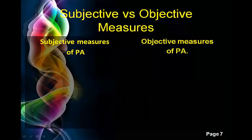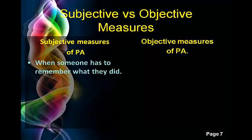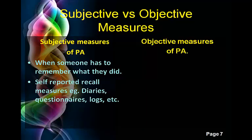Now we'll look at how we actually measure activity — subjective and objective methods. Subjective measures are when someone has to actually remember what they did; they have to self-report or recall their activities. This includes things like diaries, where they write down what they've done; questionnaires, where they answer questions given by a researcher; and logs, which are a daily rundown of everything they've done.